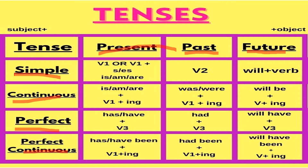In simple present tense, first person — like I am the first person and you are the second person. The same rules apply with plural also. With singular, we will be using the first form of the verb plus S or ES.